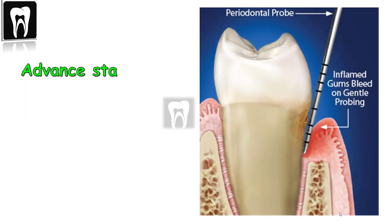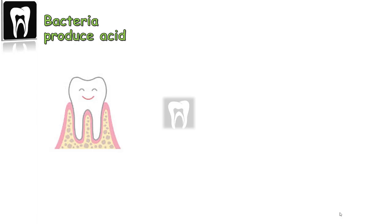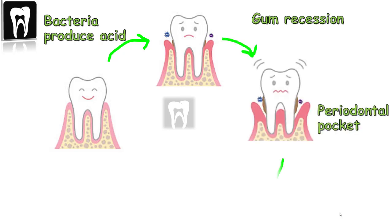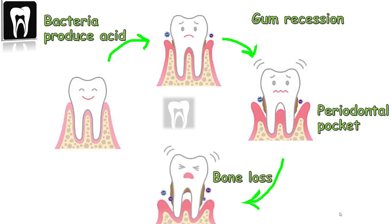So what is periodontitis? It's an advanced stage of gum disease — inflammation in all the tissue around the tooth, where the gums, periodontal ligaments, and jaw bones are seriously infected. The bacteria in the plaque can produce acid, causing the gum to pull further away from the teeth — leading to gum recession, periodontal pockets, and bone loss. The gums and bone try to run away from the bacteria and acid. This can cause bone loss until the tooth eventually falls out. Periodontitis cannot be reversed, especially when it reaches an advanced stage with bone loss and tooth loss.